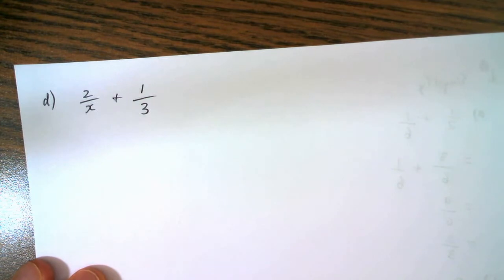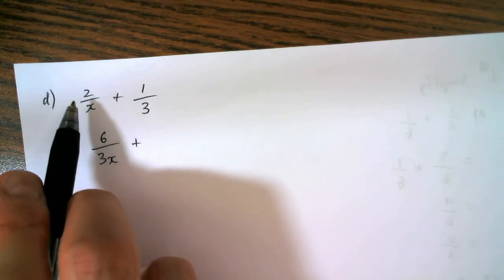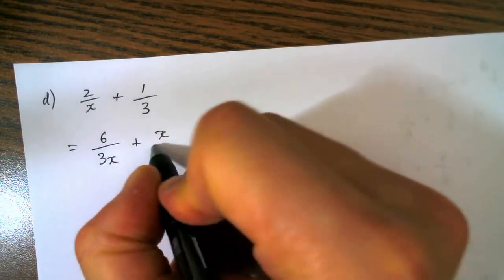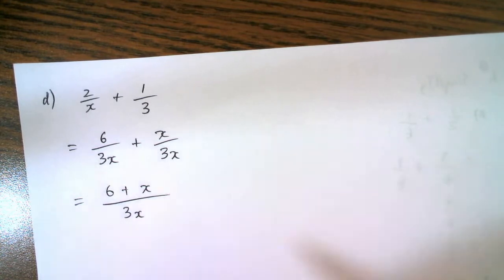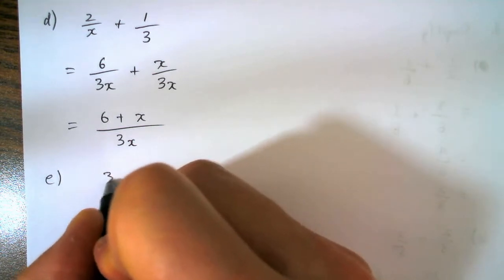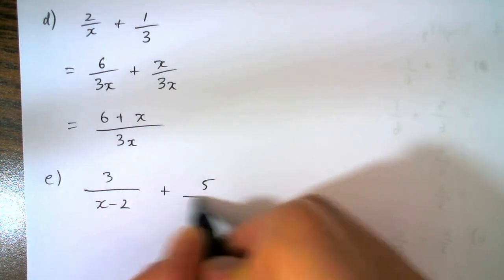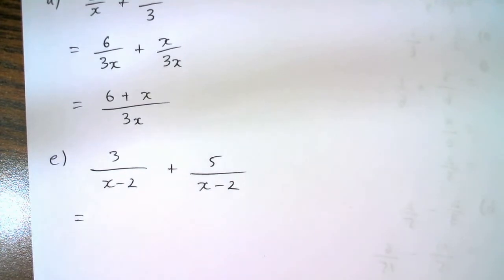So we have denominators of x and three. That means our common denominator is going to be three x. So I've multiplied the numerator and denominator by three, and I'm going to multiply the numerator and denominator by x, so in this case I already have a common denominator.